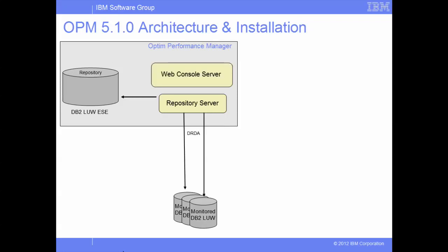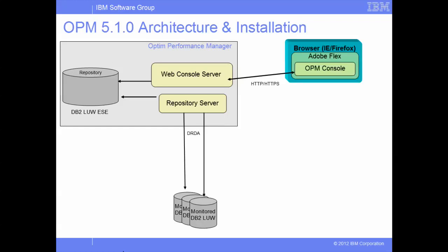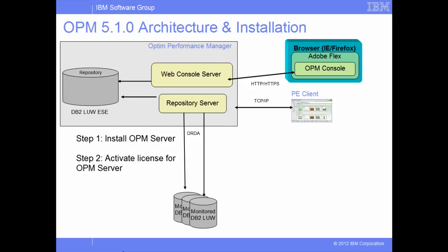The console server runs as an application and connects to the repository database. It also allows users to use a web interface to retrieve the collected performance data and configure the monitoring behavior of Infosphere Optum Performance Manager. There are other components such as performance expert client, but we are not going to cover the installation of this component here. We will install the Infosphere Optum Performance Manager server and then activate the license key for the server.